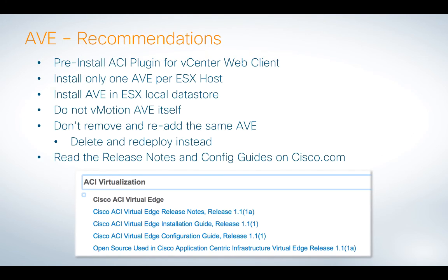A couple of recommendations to be aware of: if you're going to use the ACI plugin for vCenter, have that pre-installed. You should only install one AVE per ESX host. When you do install the AVE, Cisco recommends putting it into the local datastore — in my experience it works regardless, but follow Cisco's suggestions. Don't try to vMotion the AVE after you've deployed it. It's acting as a form of virtual switch, and every ESX host participating in ACI will have its own instance, so there's no real reason to vMotion it.